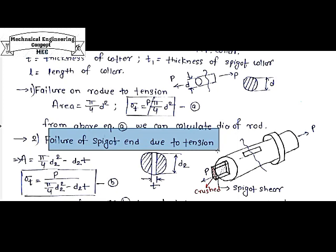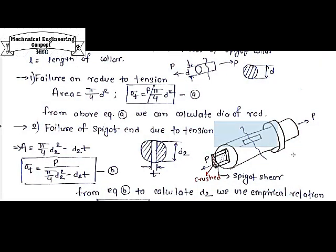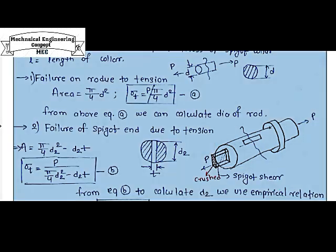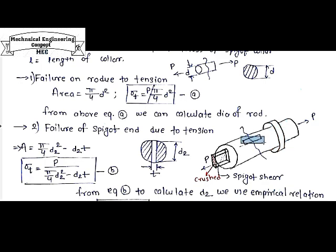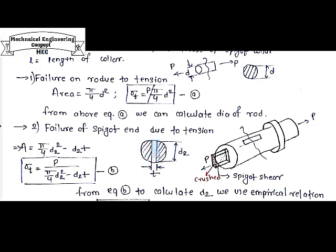To design the spigot we need to consider its failure modes. First, tensile failure of the spigot. The spigot has a collar section and a slot where the cotter fits — slot cross-section is thickness T and width B. If we apply tensile force on the spigot, the component will fail at the mid-section which has the cotter slot. The circular section of the spigot is diameter D2, so the resisting area will be pi/4 D2 squared, but since the slot removes material, the resisting area will be pi/4 D2 squared minus D2 times T, where T is the thickness of the slot.